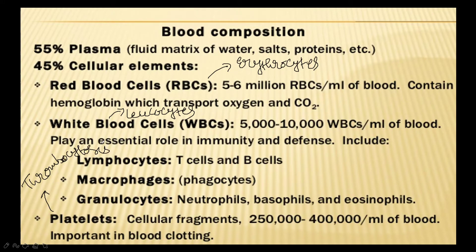White blood cells are included with lymphocytes, macrophages, and granulocytes. Granulocytes are further divided into neutrophils, basophils, and eosinophils.